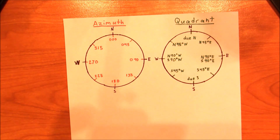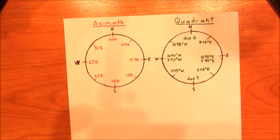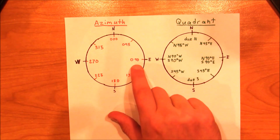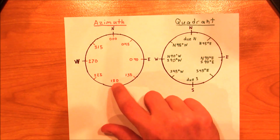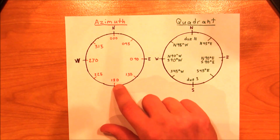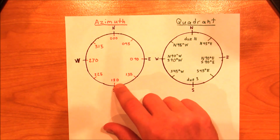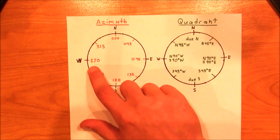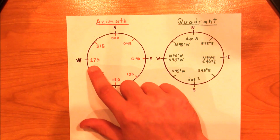If we want to represent due east, we say 090. Due south is 180. Due west is 270.